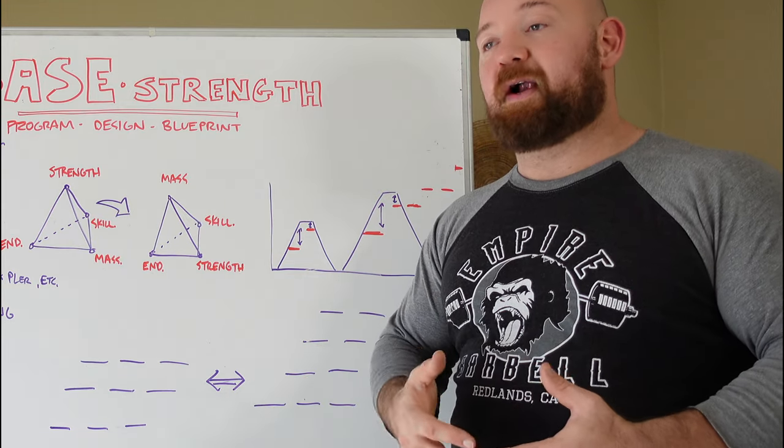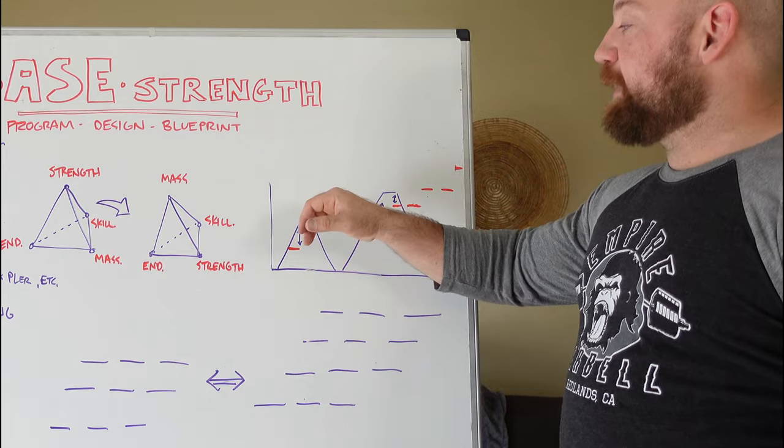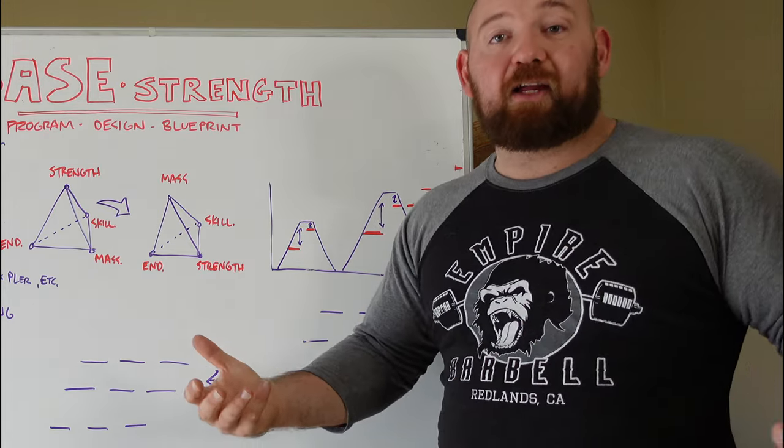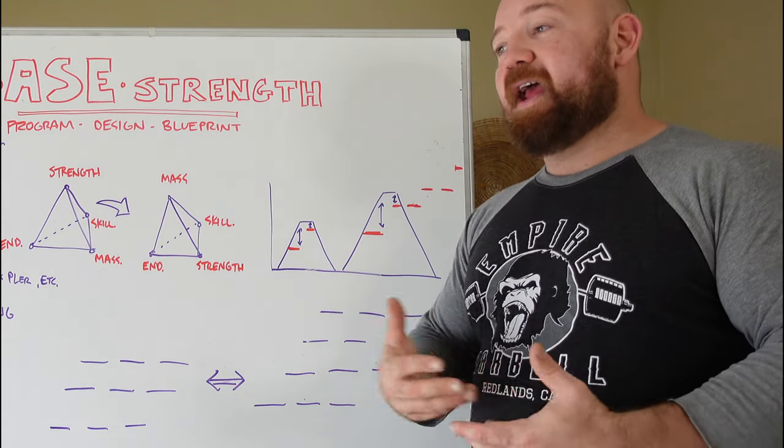Then they go into early intermediate status where they get closer to that peak. But at that point, if they're on starting strength, they've only been doing fives, or if they're on a lot of other programs, if they're winging it, they're probably just maxing out every workout. So you become very specialized to the way you train, and then you bump against that peak, and then you stagnate.